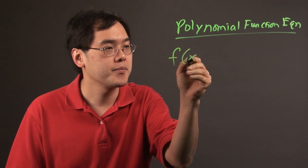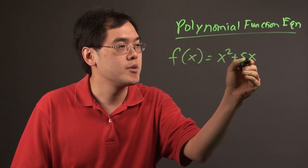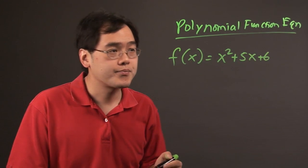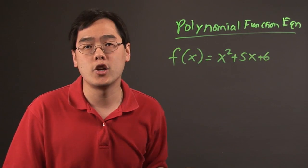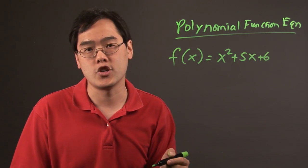So for example, if you have f(x) = x² + 5x + 6, this is a polynomial function because it fits that of a polynomial and it's a function.